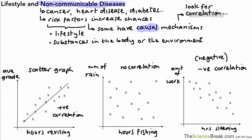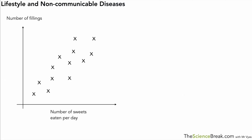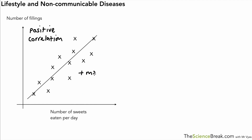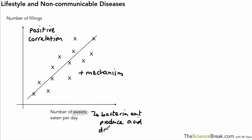A negative correlation doesn't necessarily mean one factor is linked to the other. A clearer example: a scatter graph of number of sweets eaten per day versus number of fillings shows a positive correlation, but we also have a mechanism. We know bacteria eat the sugar in sweets, produce acid as a waste product, and that acid damages tooth enamel, causing cavities and requiring fillings. So here we have both a positive correlation and a causal mechanism, supported by data from a large number of people.